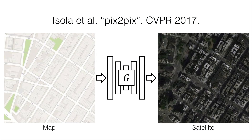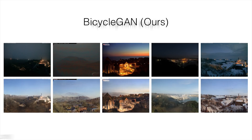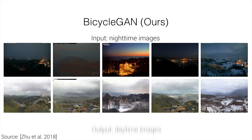Recently, a new breed of AI techniques surfaced that were capable of this new thing called image translation. By image translation I mean that they can translate a drawn map to a satellite image, take a set of colored labels and make a photorealistic facade, or take a sketch and create a photo out of it.